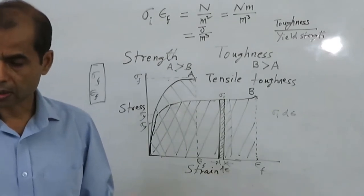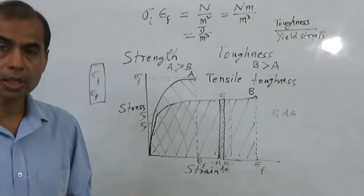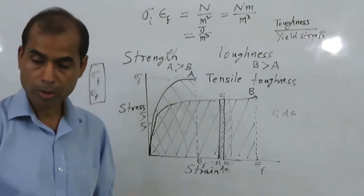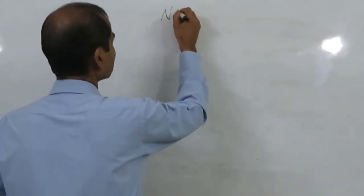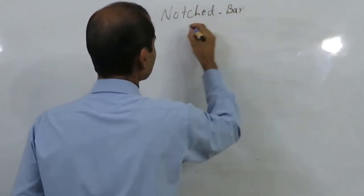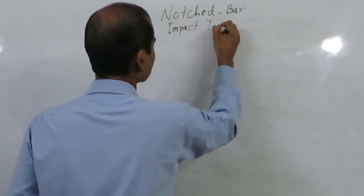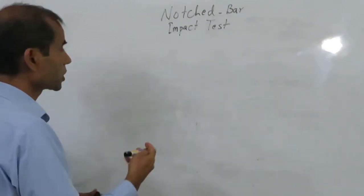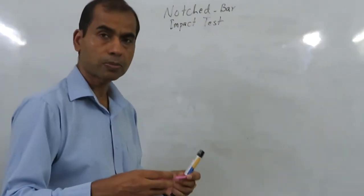Another concept of toughness — and historically the way people first understood it — is through the notched bar impact test. In the very beginning, people understood that the toughness property of a material could be assessed by testing it under impact conditions.